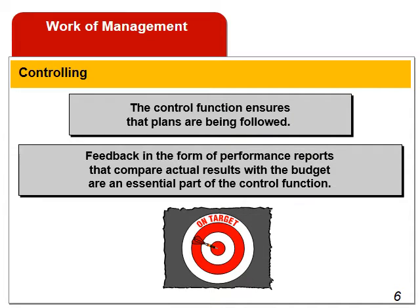One type of feedback that is very helpful to managers is called a performance report. Budgets are compared to actual results in performance reports to determine if operations are proceeding as planned. To summarize, all managers carry out three major activities: planning, directing and motivating, and finally controlling.